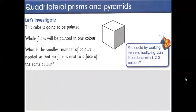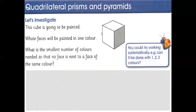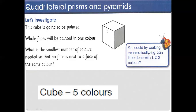Okay class, today we will learn geometry. Before we start, we must know the shape names. This cube is going to be painted — all faces will be painted in one color. What is the smallest number of colors you need so that no face is next to a face of the same color? One face is already colored, so we just need five more colors to complete the cube.